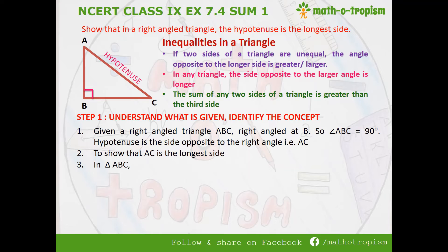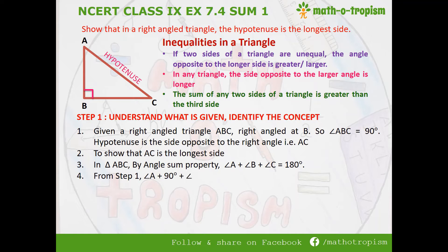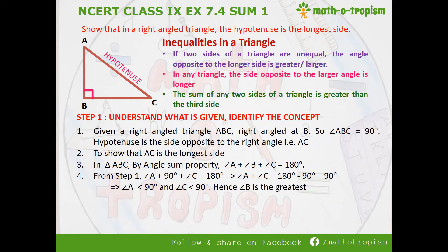We take triangle ABC. In that triangle, the sum of all angles — angle A plus angle B plus angle C — equals 180 degrees by the angle sum property. We substitute angle B = 90 degrees, giving angle A plus 90 degrees plus angle C equals 180 degrees. Taking 90 to the right-hand side, angle A plus angle C equals 90 degrees. Since the sum is 90 degrees and neither angle can be zero (otherwise it would not be a triangle), both angle A and angle C must each be less than 90 degrees. This shows that angle B is the greatest angle, as it equals 90 degrees and the other two are each less than 90 degrees.